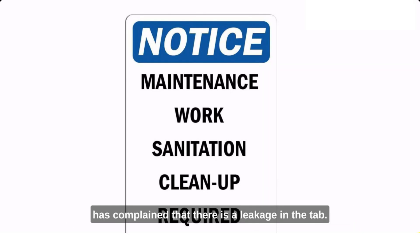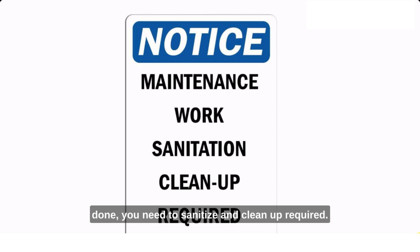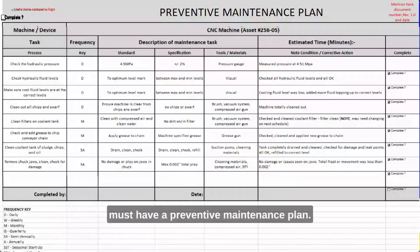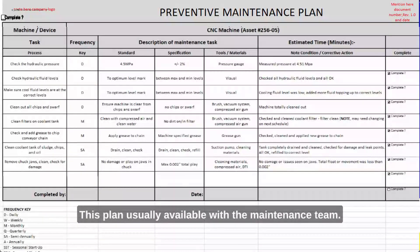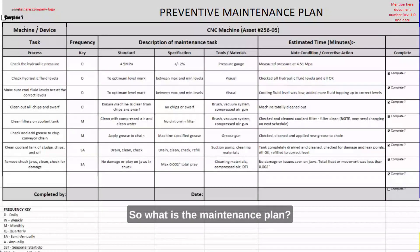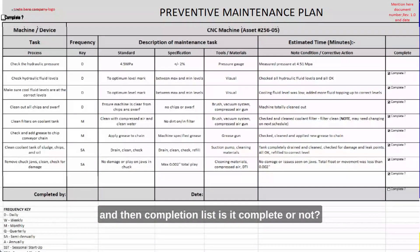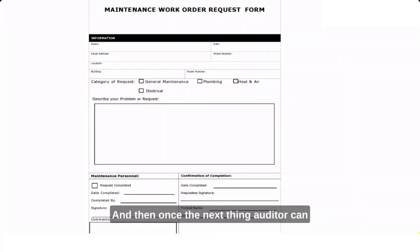When maintenance work is underway, a notice should be posted — such as 'Under Maintenance, Do Not Enter' — and once the work is done, the area must be sanitized and cleaned. You must also have a preventive maintenance plan, listing all maintenance tasks, their frequency, and estimated time. For example, for an oven, the plan should define exactly what maintenance is performed and when.